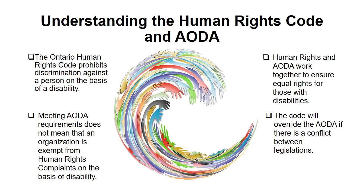Understanding the Human Rights Code and AODA: The Human Rights Code prohibits discrimination against a person on the basis of a disability. Meeting AODA requirements does not mean that an organization is exempt from human rights complaints on the basis of disability. Human Rights and AODA work together to ensure equal rights for those with disabilities. The Code will override the AODA if there is a conflict between these two pieces of legislation.